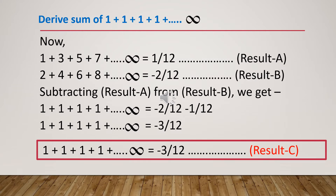Now we derive a new sum: 1 plus 1 plus 1 plus 1, etc., up to infinity. We have the sum of all odd integers (Result A): 1 plus 3 plus 5 plus 7, etc., equals 1/12. And the sum of all even integers (Result B): 2 plus 4 plus 6 plus 8, etc., equals minus 2/12. Subtracting Result A from Result B gives 1 plus 1 plus 1 plus 1, etc., equals minus 2/12 minus 1/12, which is minus 3/12. This is Result C.